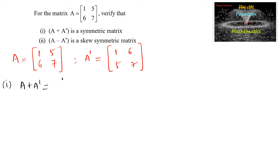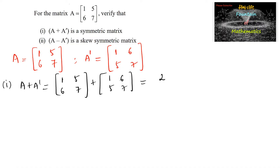A plus A transpose is equal to [[1,5],[6,7]] plus [[1,6],[5,7]], which gives us corresponding elements added: 1+1=2, 5+6=11, 6+5=11, and 7+7=14. So A plus A transpose equals [[2,11],[11,14]].